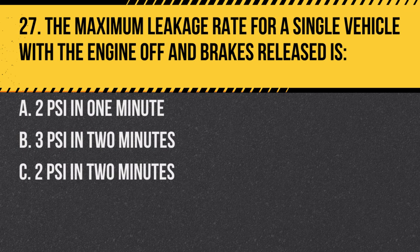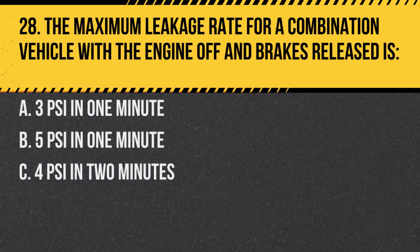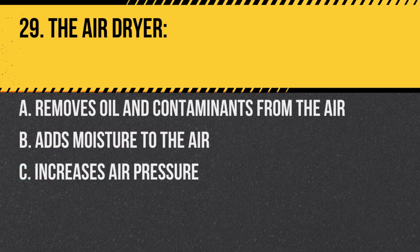Question 27. The maximum leakage rate for a single vehicle with the engine off and brakes released is 2 psi in 1 minute. Questions 28 and 29 cover the air drier, which ensures clean air in the system.